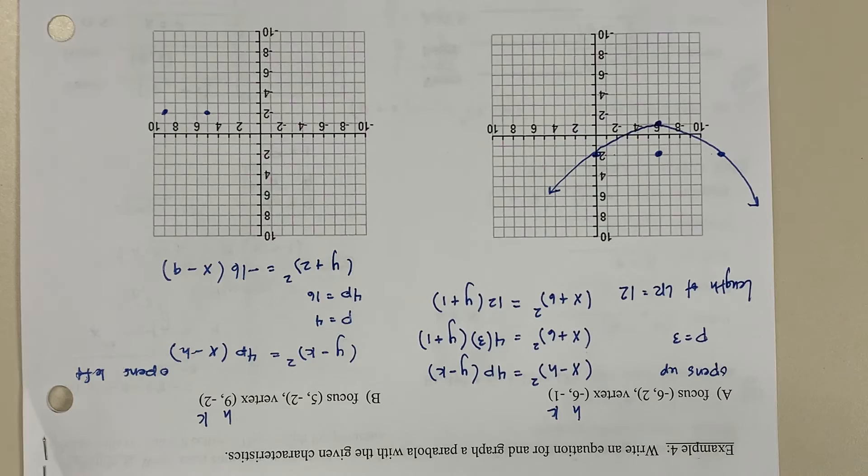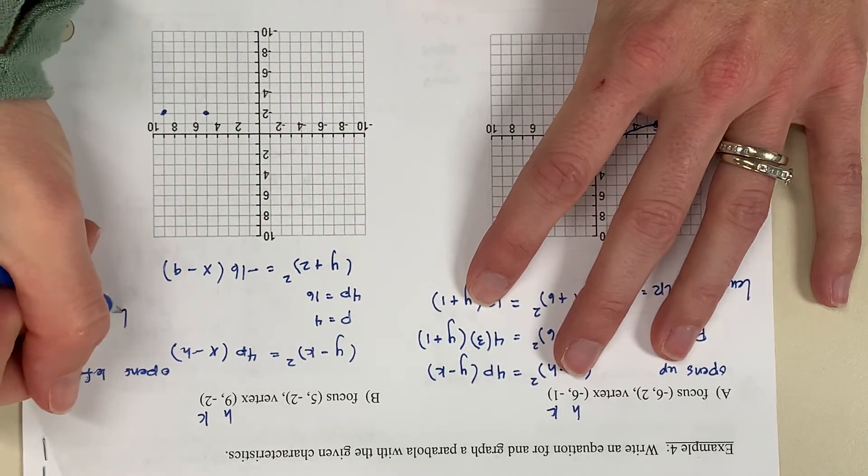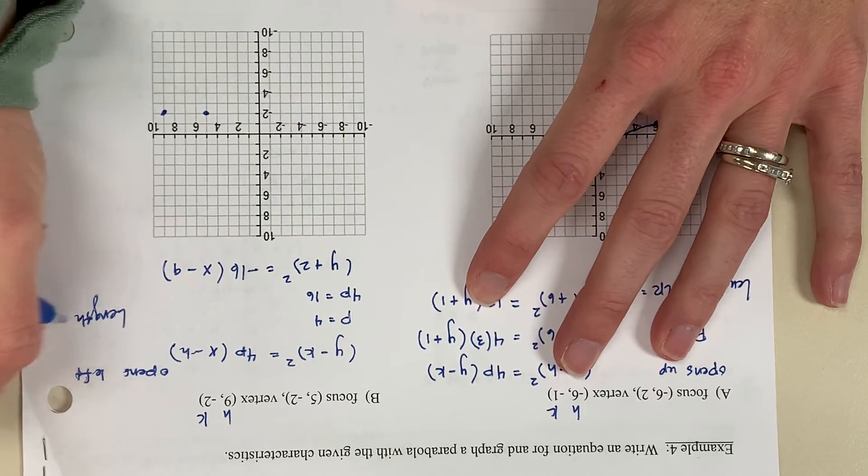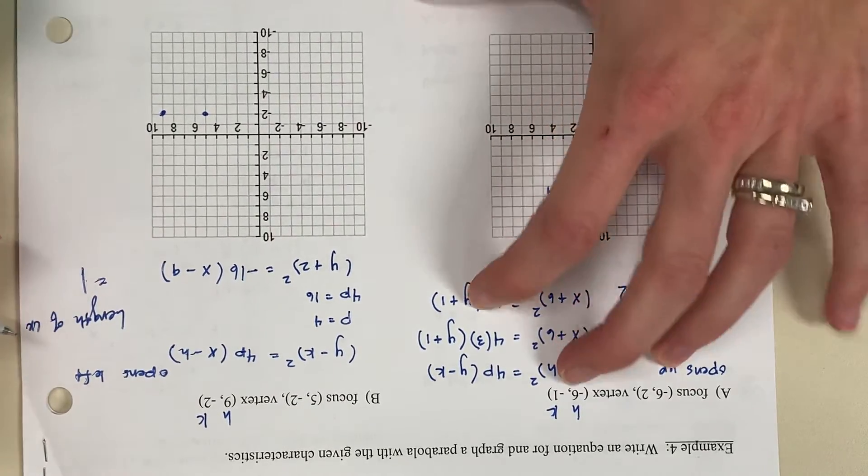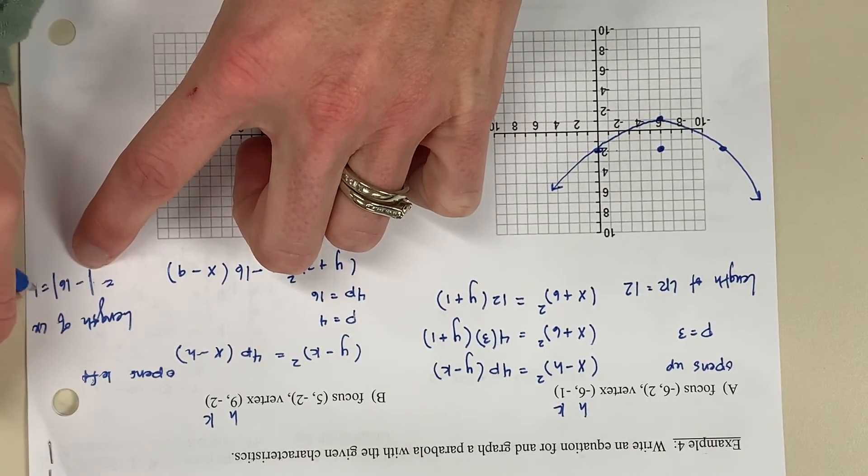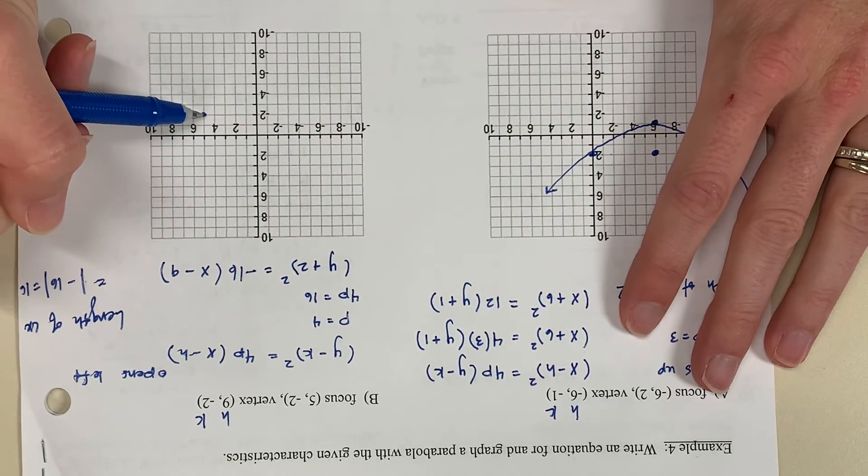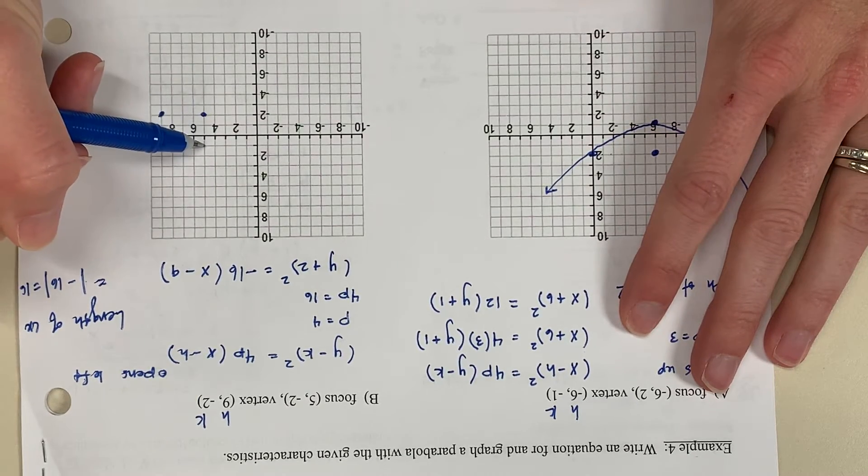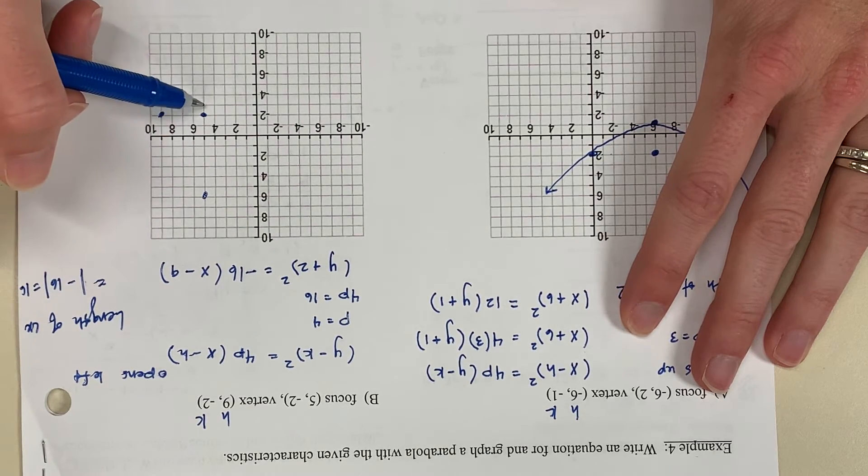Okay, length of the LR is the absolute value of 4p. So that's the absolute value of negative 16, which equals 16. Okay, half of 16 is 8. So from my focus, I'm going to count up 8 and I'm going to count down 8.